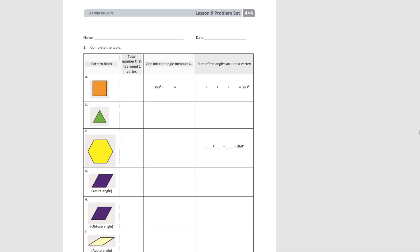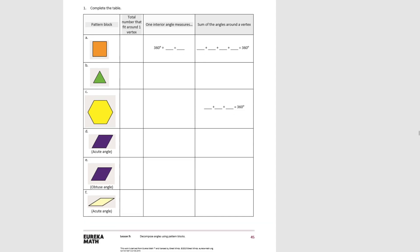Let's go to our problem set. We're going to record what we just did. We already did the square pattern block, and we saw that four pattern blocks fit around the vertex. So one interior angle is 90 degrees — we know the complete circle is 360 degrees, we put in four pieces, therefore each interior angle is 90 degrees. Interior means on the inside — those are the interior angles. So the sum of the angles around the vertex is 90 plus 90 plus 90 plus 90 degrees.